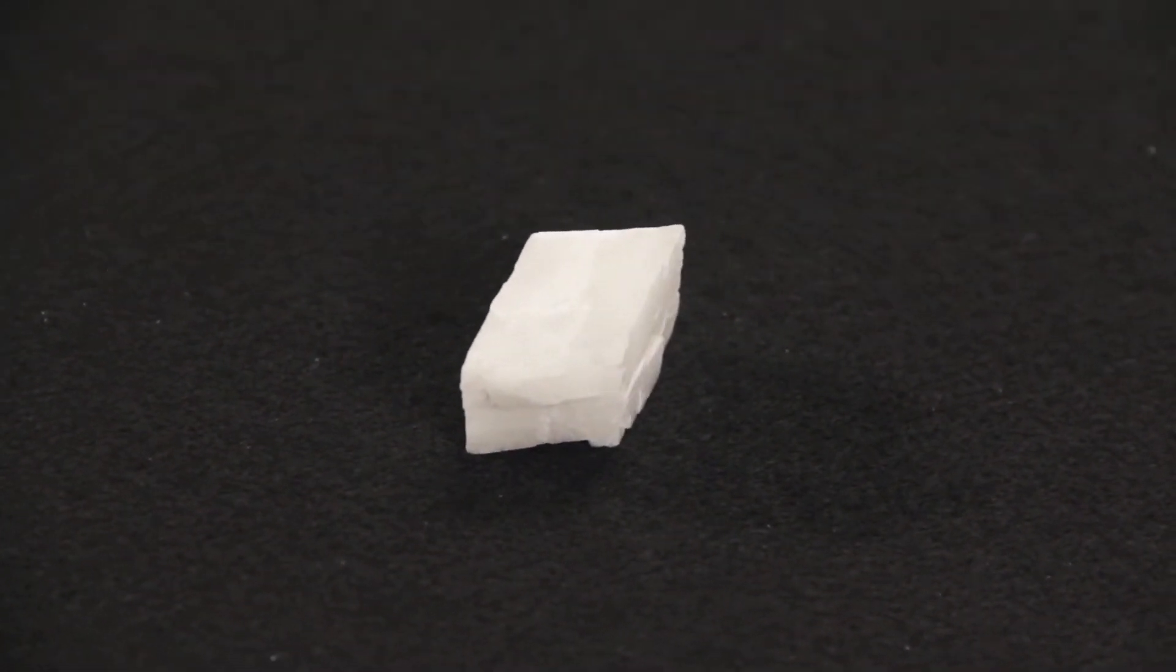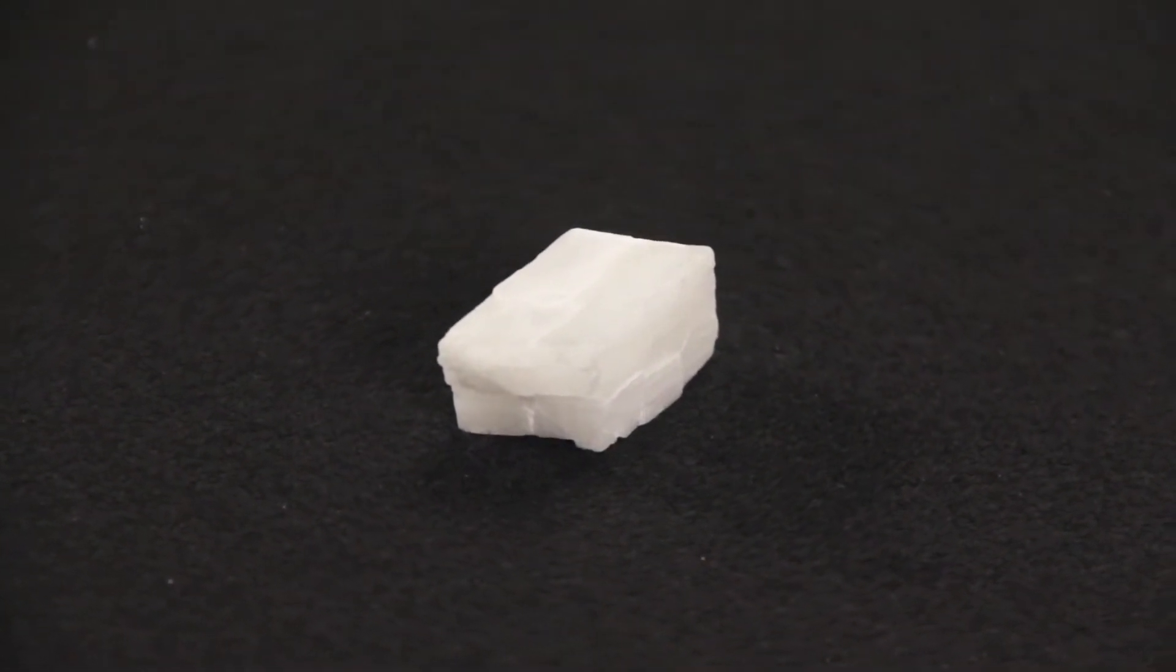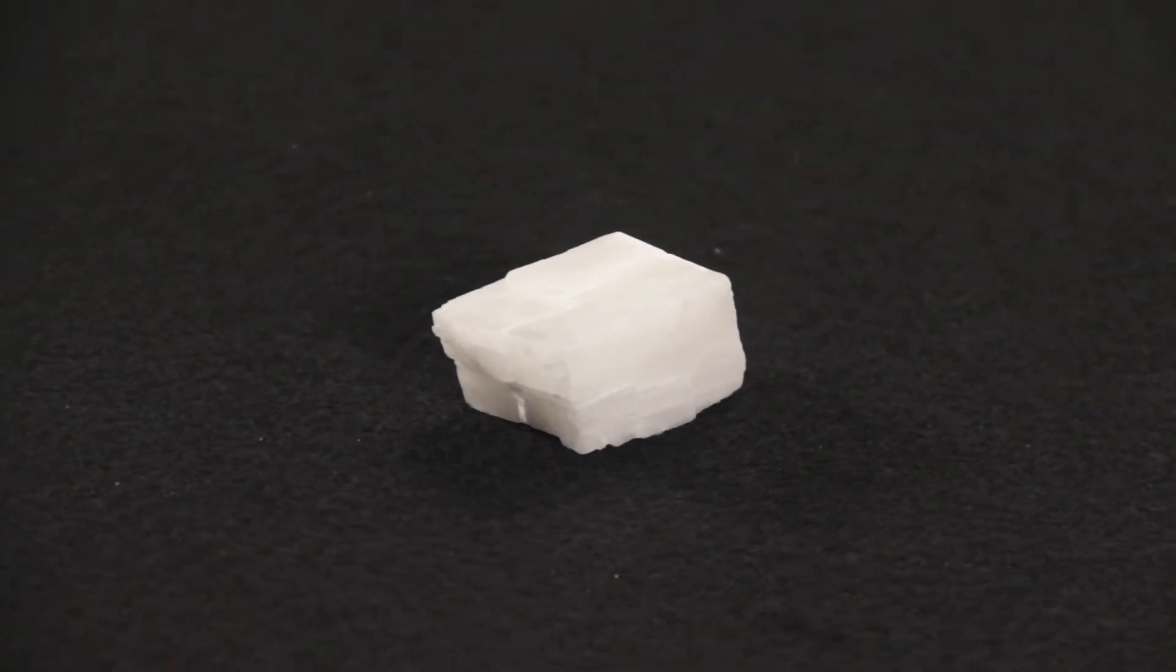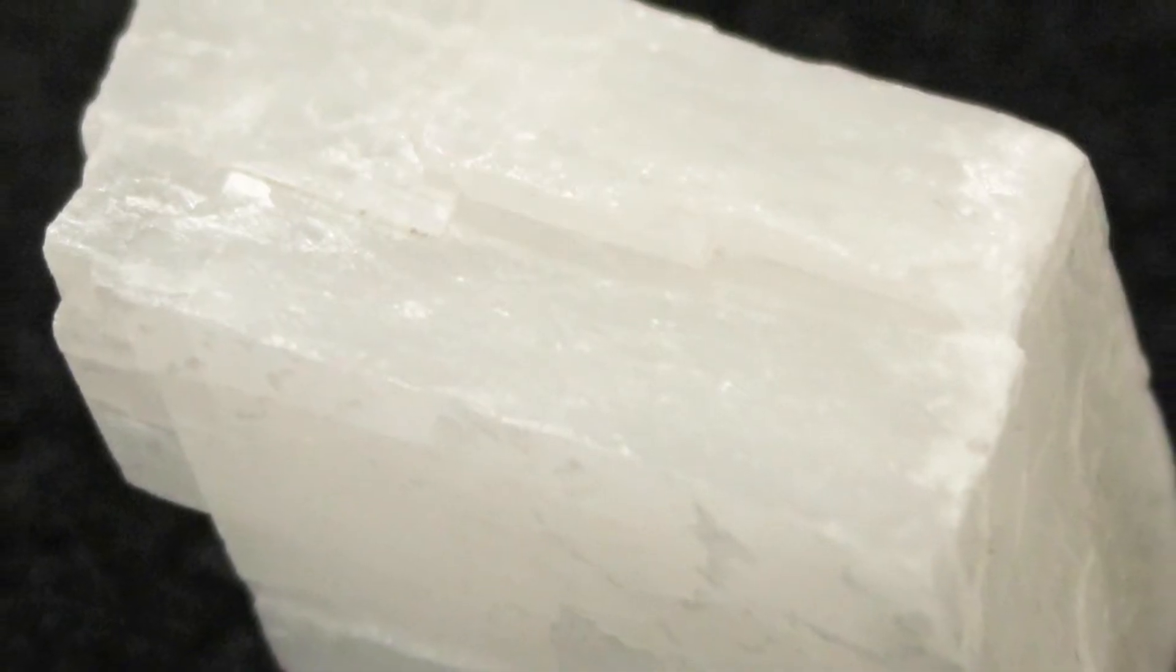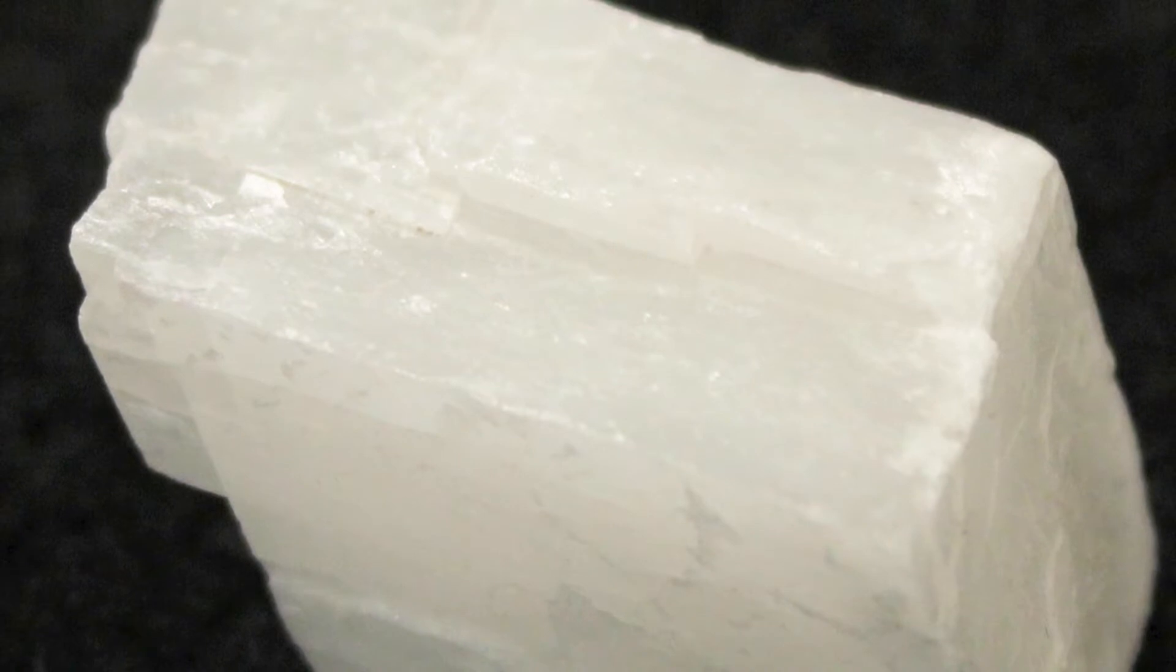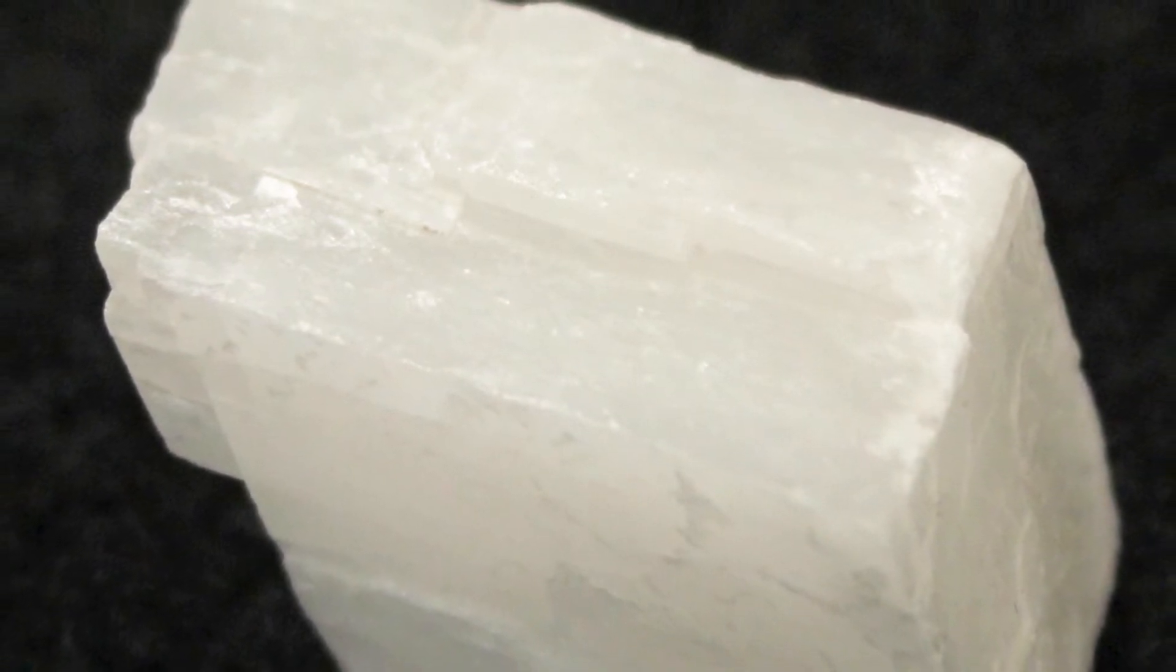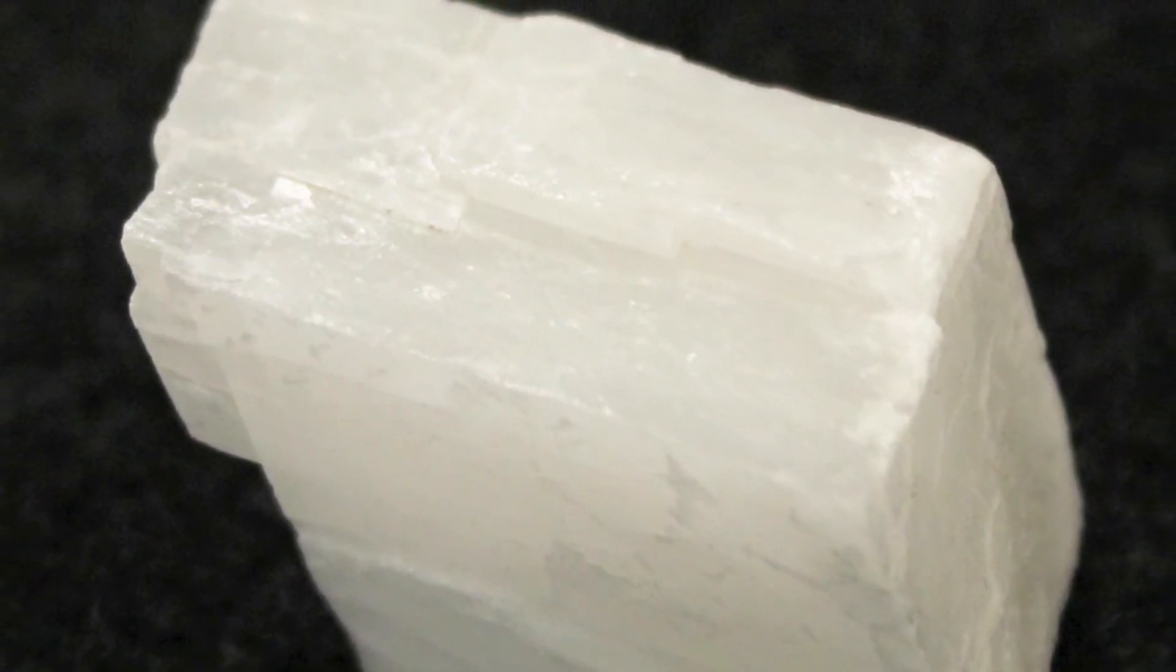With any ordinary sample of calcite, one should be able to find several flat cleavage surfaces. One important thing to notice about these cleavage surfaces is that when they intersect, they never do so at 90-degree angles.